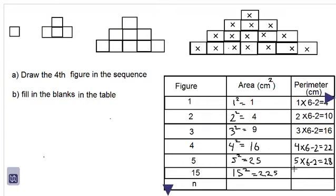We then say fifteen times six subtract two, because we recognize our pattern. The number of the figure always comes first. Fifteen by six is ninety, subtract two is eighty-eight.